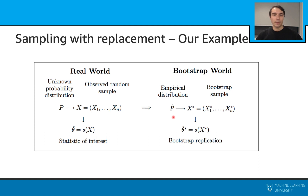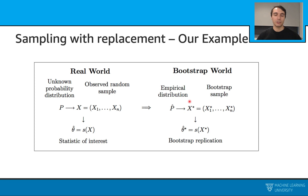Here is the comparison between the real world and the bootstrap world. In the real world, we have an unknown probability distribution and an observed random sample, and we try to estimate a statistic of interest such as median, mean, or standard deviation. In the bootstrap world, we have an empirical distribution — the distribution of our original sample — from which we get bootstrap samples, and then we calculate our statistic from those bootstrap samples. This becomes our estimation of the overall population parameter.